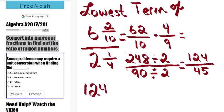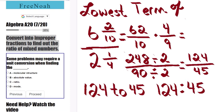So our ratio is 124 to 45 or 124 colon 45. Both answers are acceptable in ratio format.